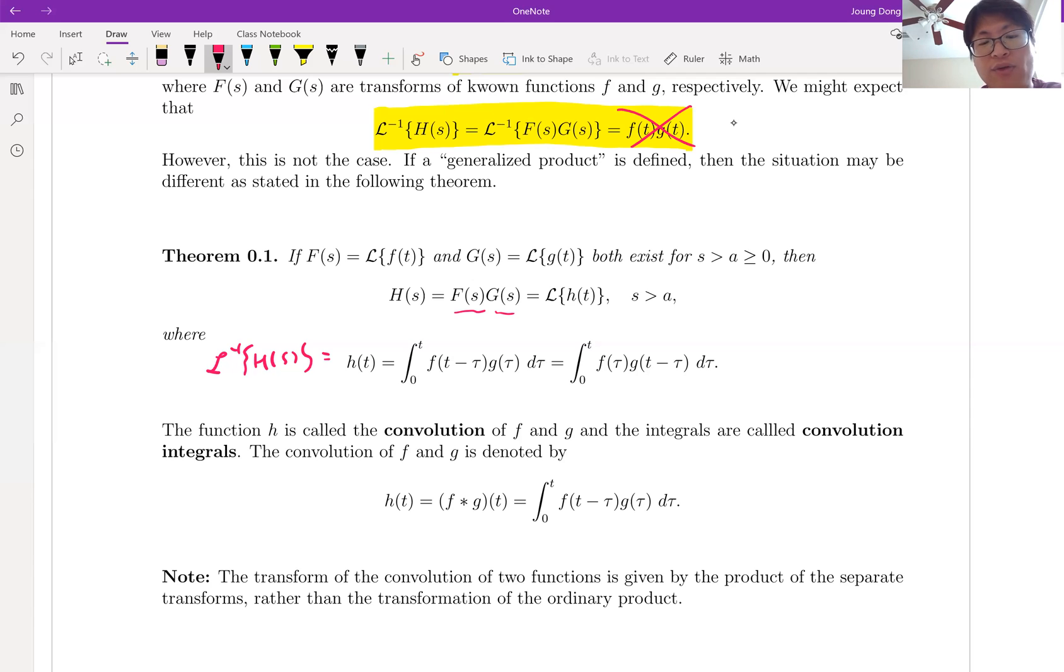So look at that. Your integral is integral 0 to T, F of T minus tau, just separate, and G tau, d tau. Or we can write it this way, opposite order. We're going to talk about the detail of this one in the property of convolution integral. We're going to say it is commutative.